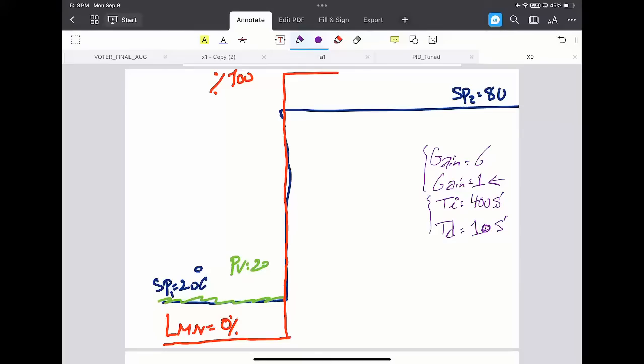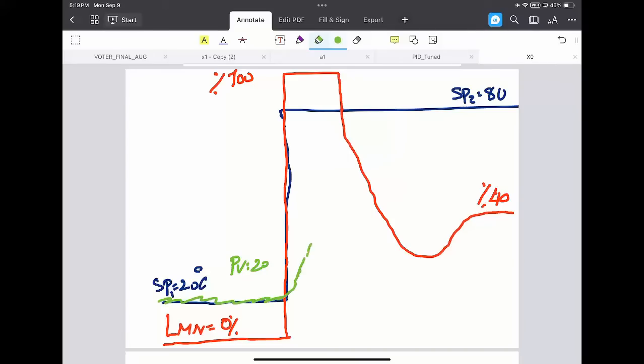So our ideal case will be, the ideal case will be we open the valve 100% slightly during the warm-up of the machine, and we close a bit, we settle, settle to a final value. So final opening of, like, 40% of the opening. It depends on the overall performance.